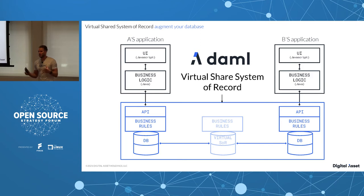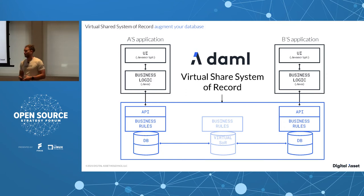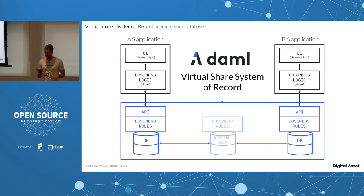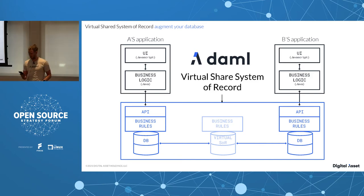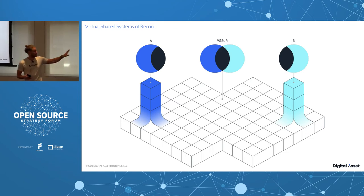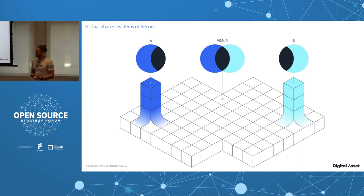'Virtual' because the data may not physically exist in one place, and 'shared' because it is as if both applications are reading from the same system. The integration moves from the business logic level down to the database. You don't integrate with the database directly — you interact with an API at that level which handles data synchronization for you. The data still physically sits at each party's location and is still controlled by them, but integrated at the core data level.